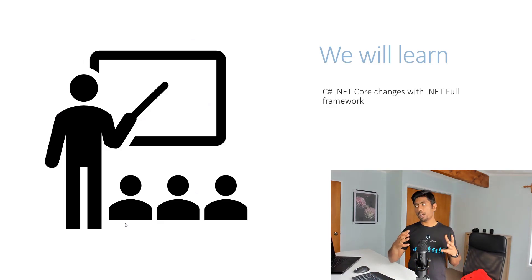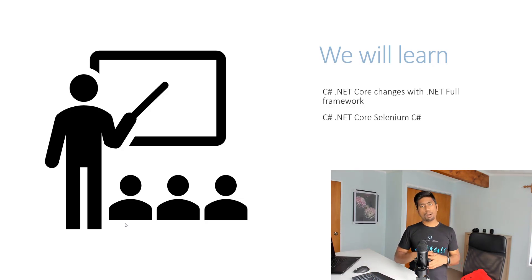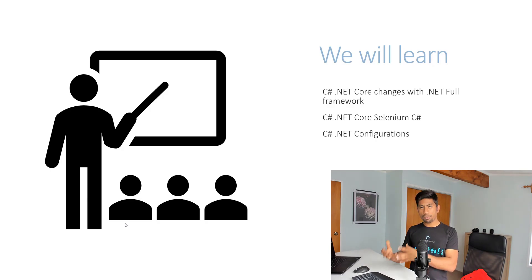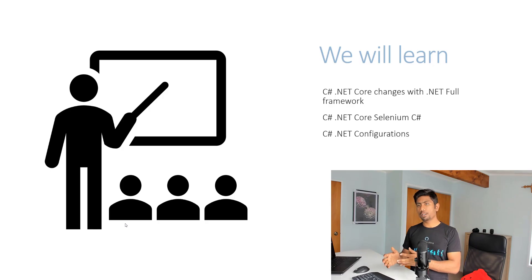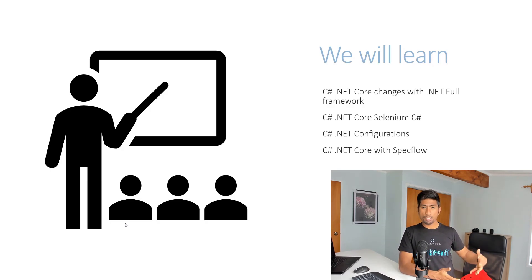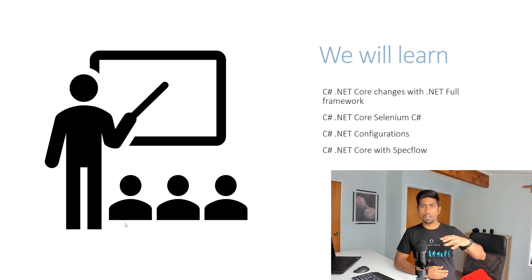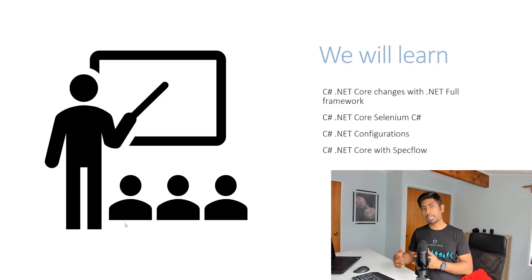This series is going to cover the C-sharp .NET Core changes compared to the full .NET Framework series you may have already watched. We'll discuss C-sharp .NET Core for Selenium specifically, and also some .NET Core configuration changes — for example, there is no app.config or app.settings; instead you should use a JSON file. We'll also cover C-sharp .NET Core with SpecFlow, which many students asked to have covered exclusively in a dedicated video.